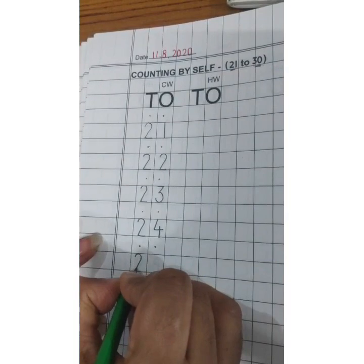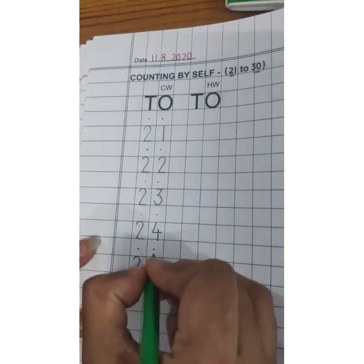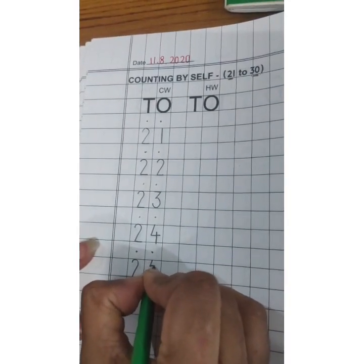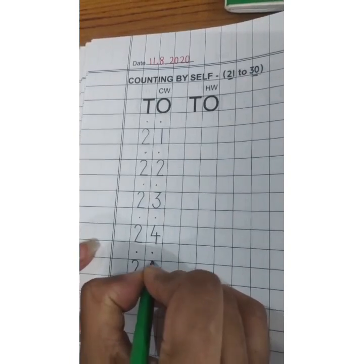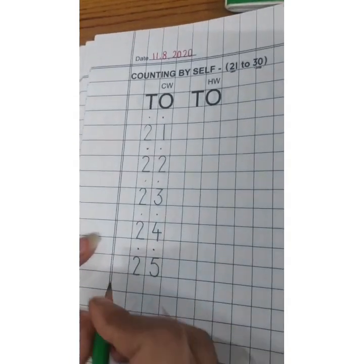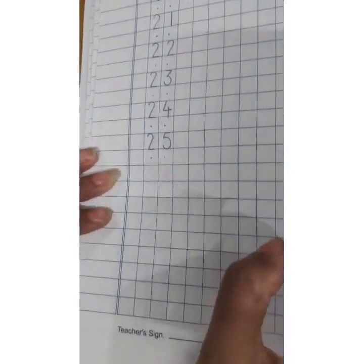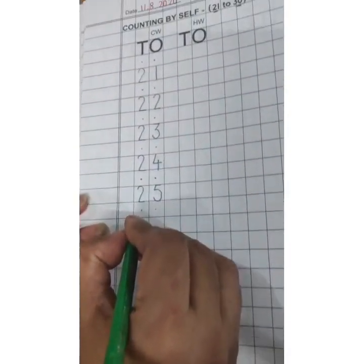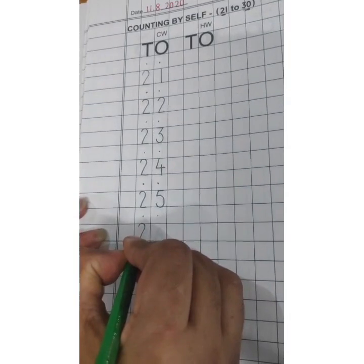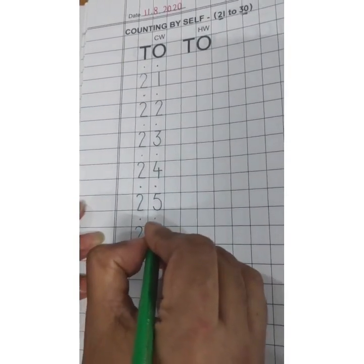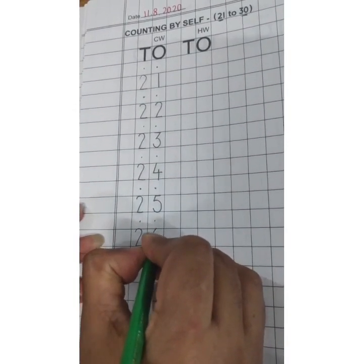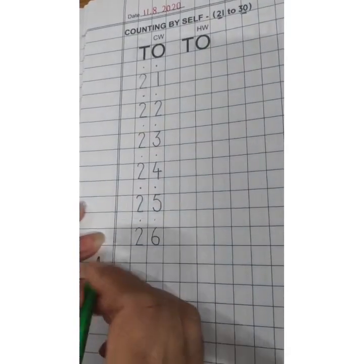Again put the dot and leave the box. 2 tens, 5 ones. Again dot and leave the box. 2 tens, 6 ones.